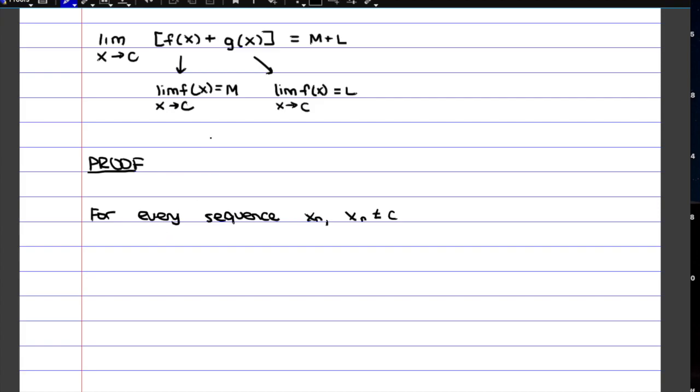We can say that instead of writing it out this way, that limit of x goes to c of f is equal to m, we can say that when xn approaches c, then f approaches m, and also g approaches l.